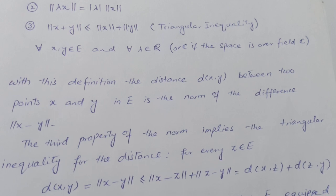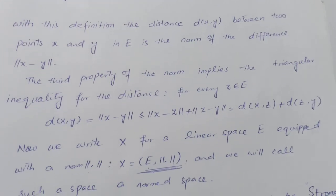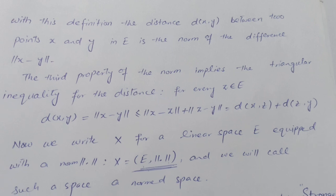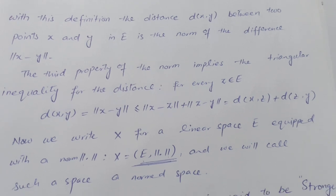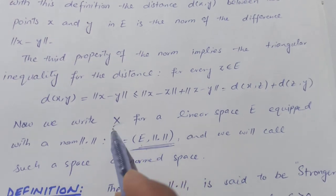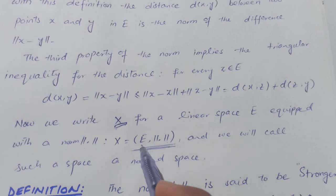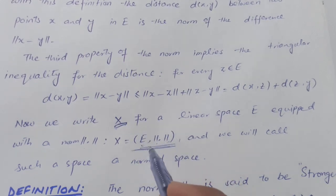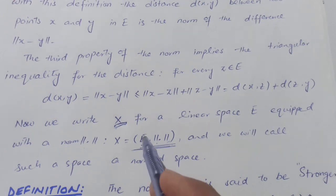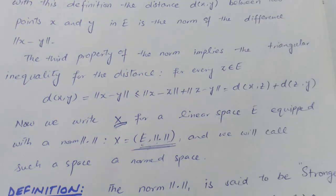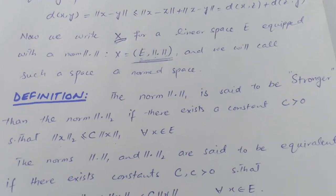The triangular property may also be represented as ||x + y|| ≤ ||x − c|| + ||c − y||. We write (X, ‖·‖) for the linear space E. This pair — E with its norm — is known as a normed space, or we say E is a normed space with this norm.